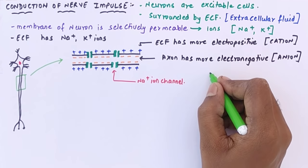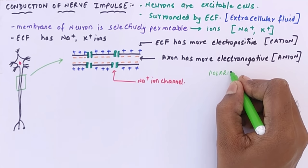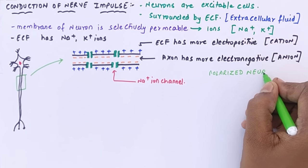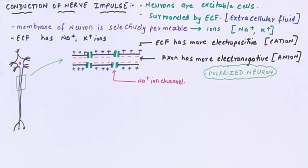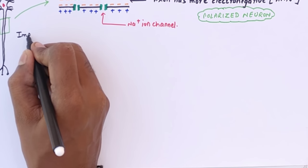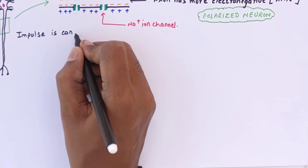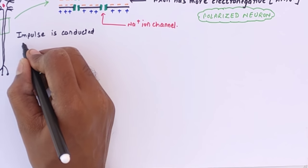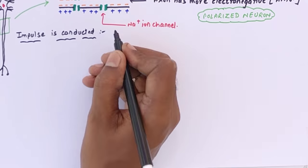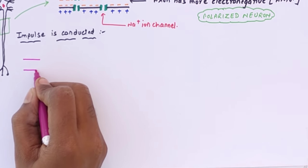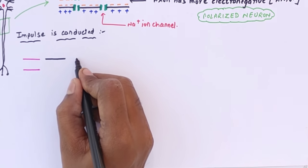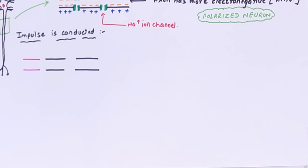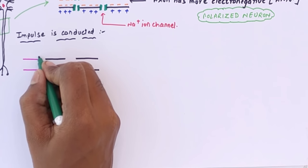This resting neuron, where no impulse is being transferred, is called a polarized neuron. The sodium-potassium pump or sodium ion channel allows the exchange of ions between the axon and the ECF. When the impulse travels, conduction occurs in three different forms — the neuron can be polarized, depolarized, or repolarized.